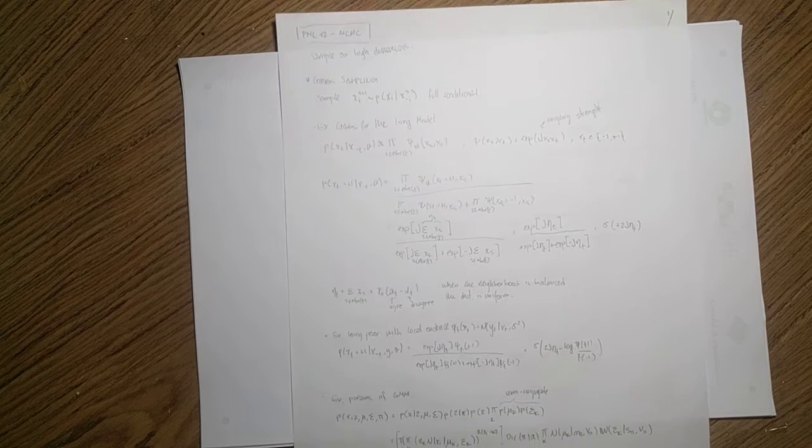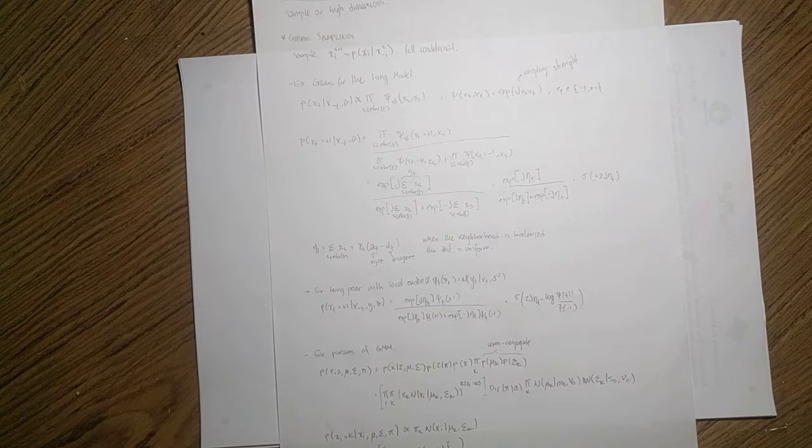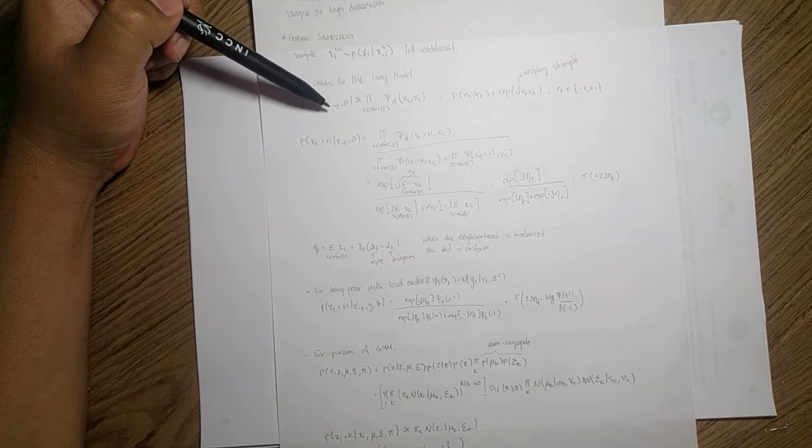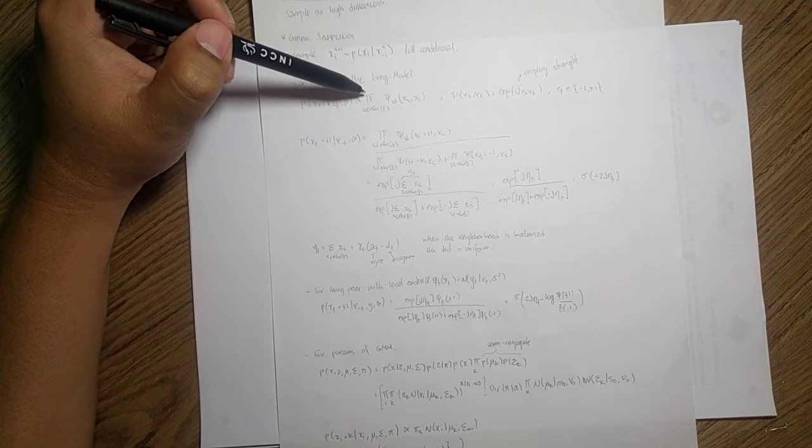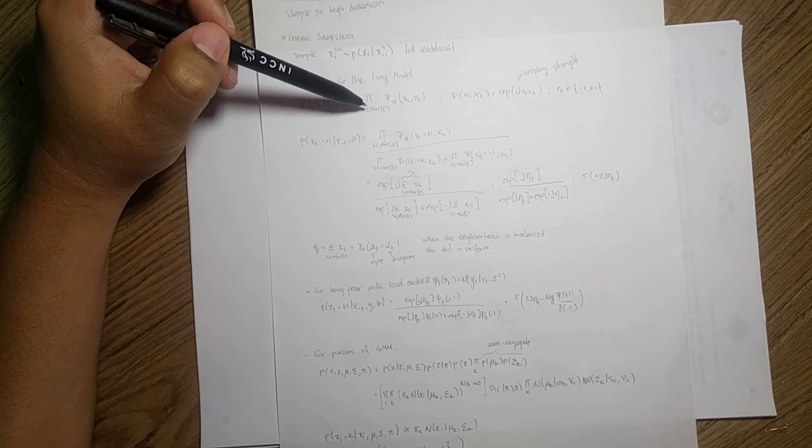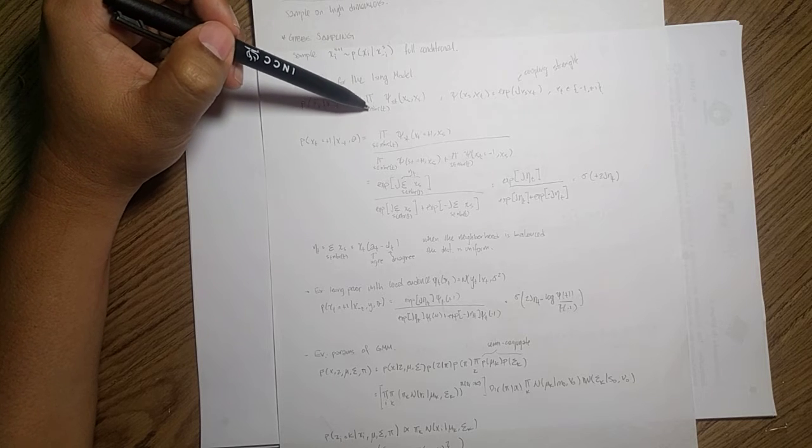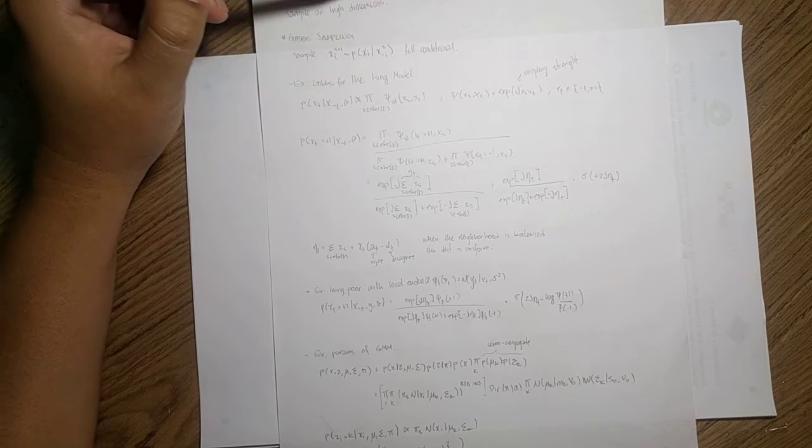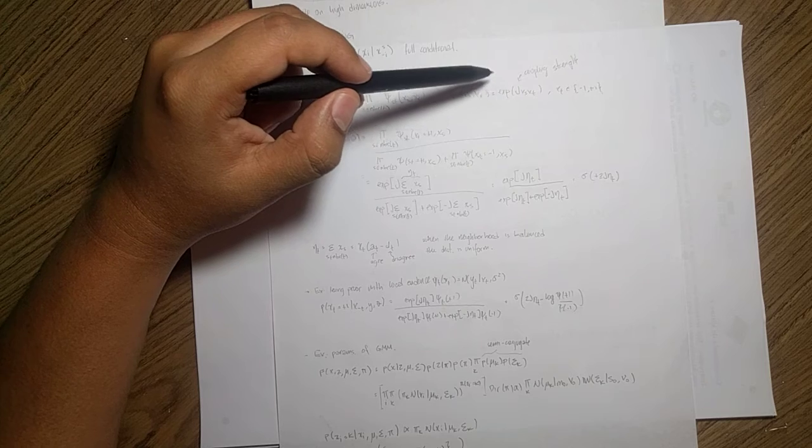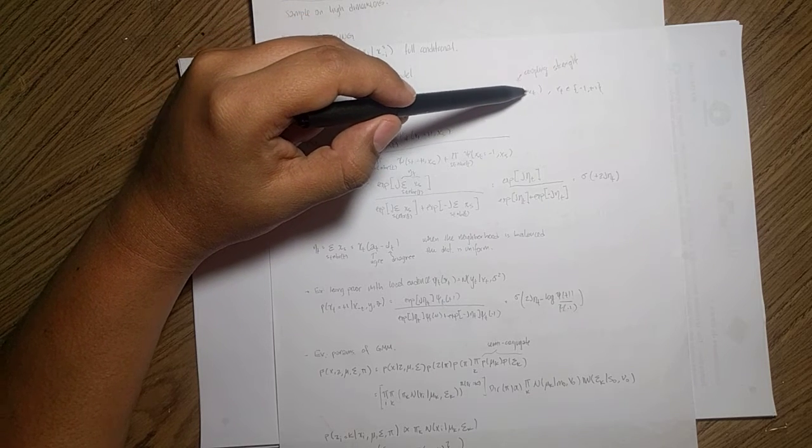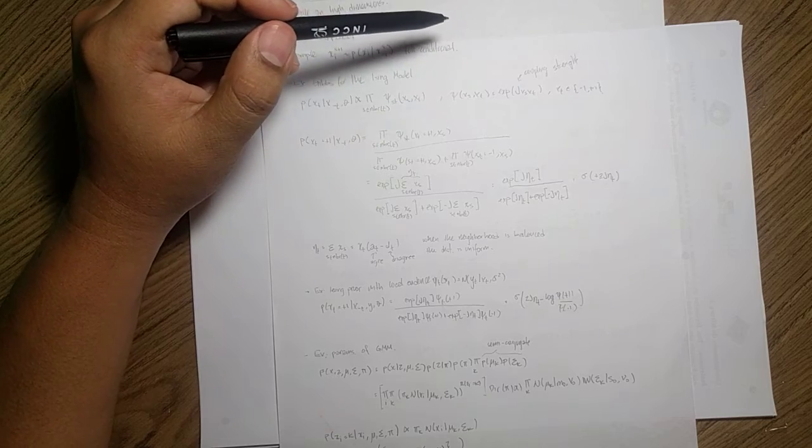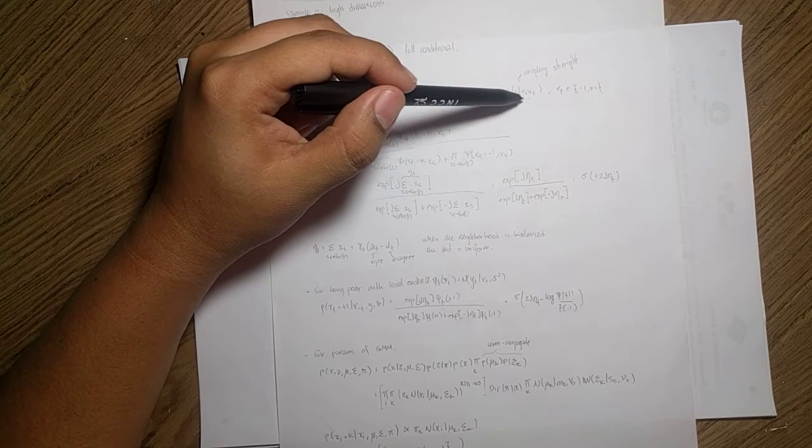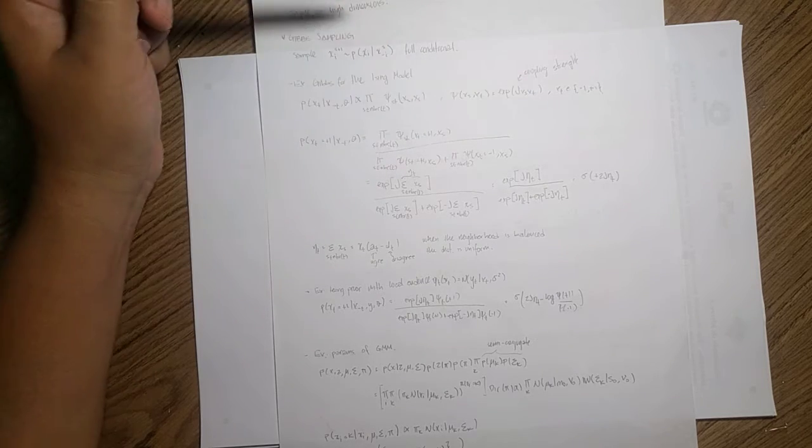Now if you want, we can go through some examples here. For instance, consider the Ising model in which the posterior of one of them given the rest is this multiplication of all the nodes within the neighborhood of T. And then you have some potential, some potential given Xs and Xt. And this potential normally is just exponential of this J in the multiplication of Xs and Xt. And this J is just the coupling strength, like how strong are these two nodes related.